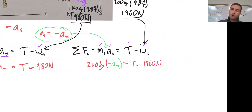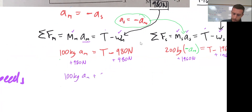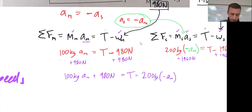Setting both equal to tension T: I add 1960 to both sides of the set equation, and add 980 to both sides of the man equation. I get: 100 kilograms times acceleration of the man plus 980 Newtons equals the tension force, which also equals negative 200 kilograms times acceleration of the man plus 1960 Newtons.